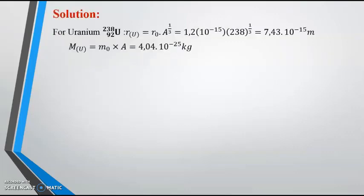To find the radius of the nucleus of uranium, we can use the formula concluded in the previous session: R uranium equals R0 multiplied by cubic root of A. The mass number equal 238. By calculation, radius of uranium equals 7.43 times 10 to the power minus 15 m. And the mass of the uranium nucleus is equal to M0 multiplied by A. So we can conclude that the mass of the uranium nucleus is equal to 4.04 times 10 to the power minus 25 kg.